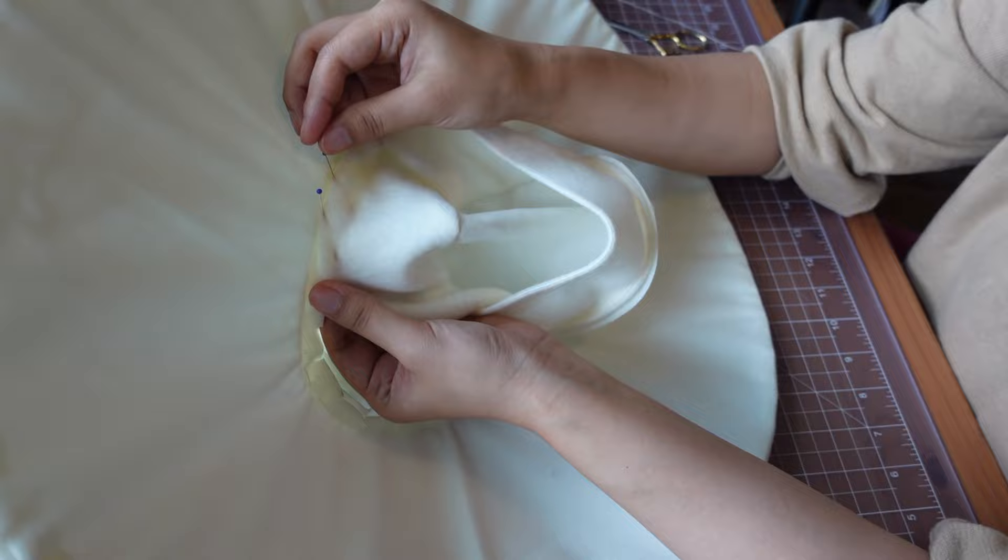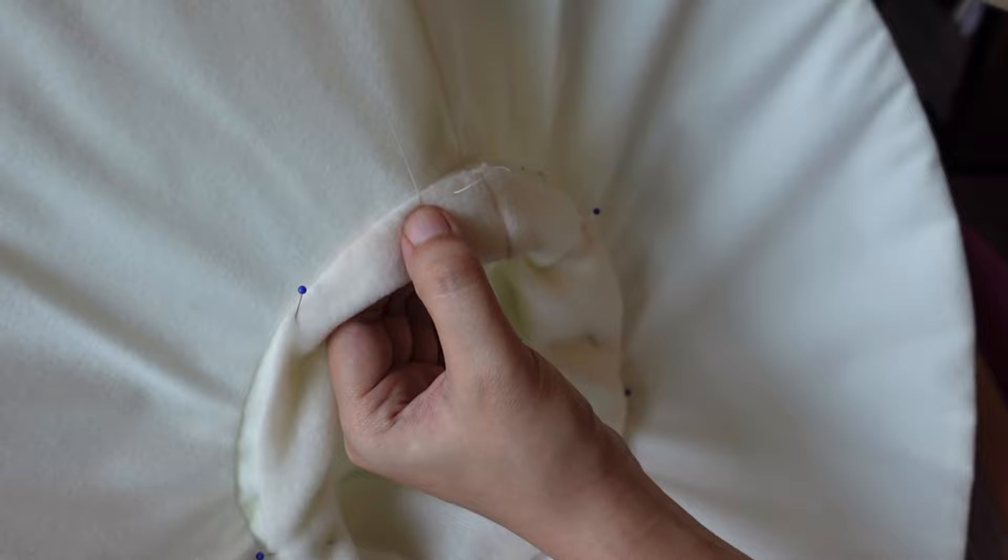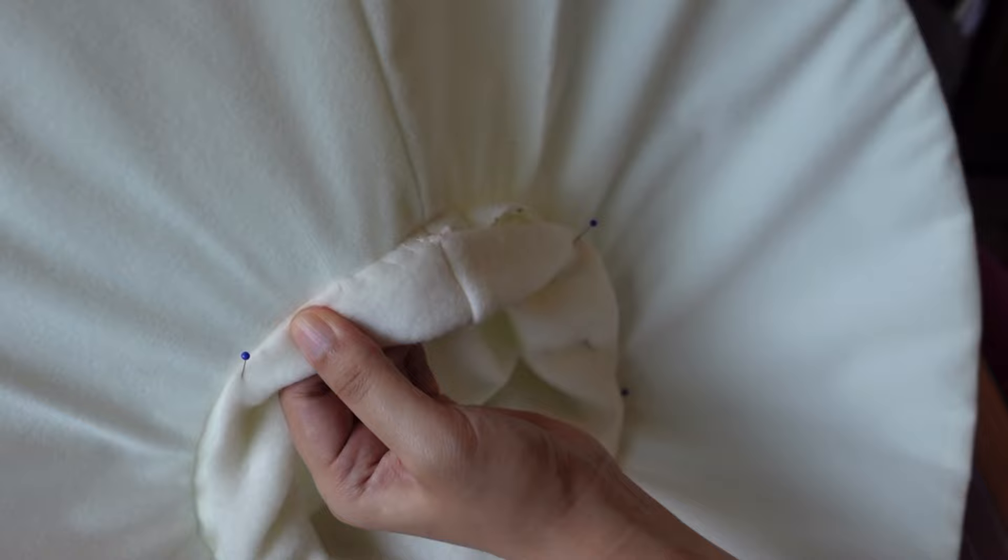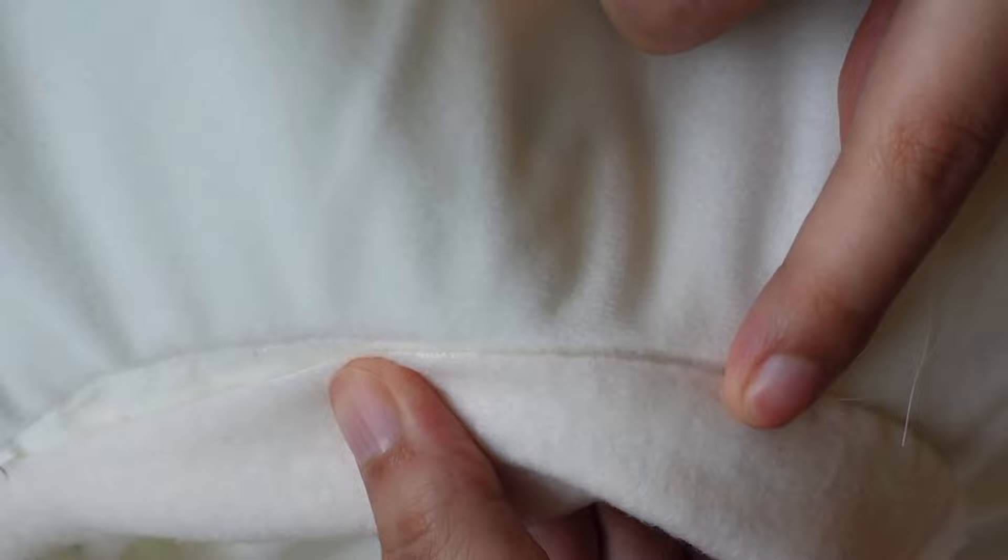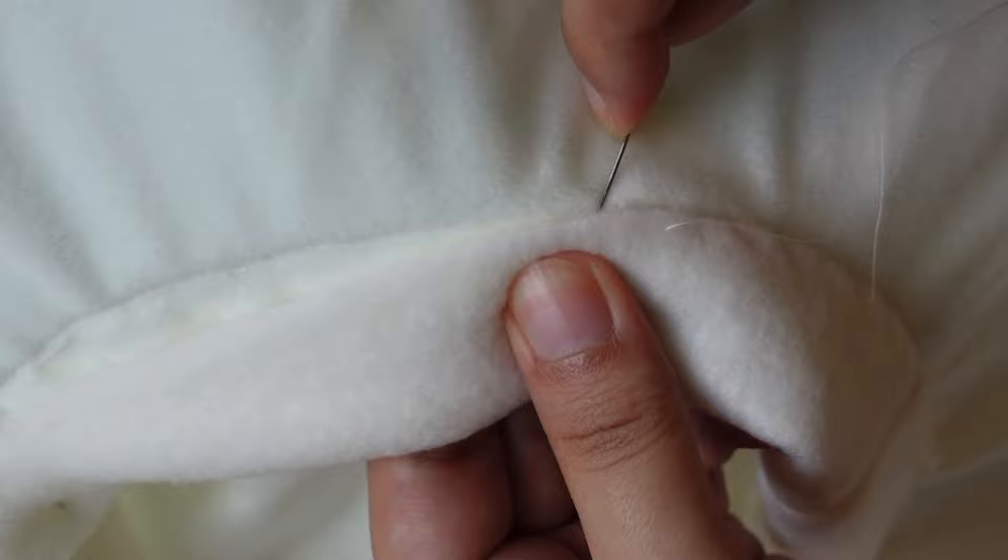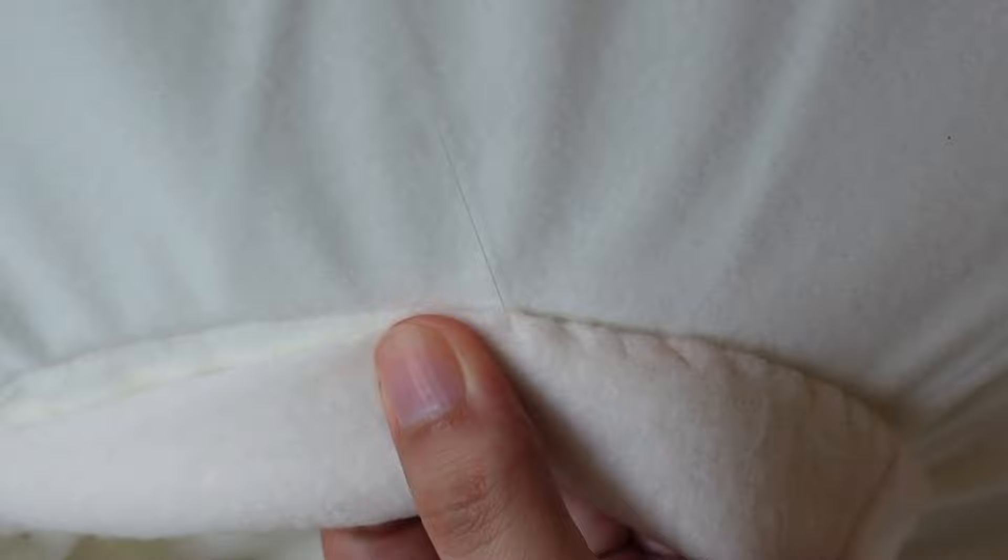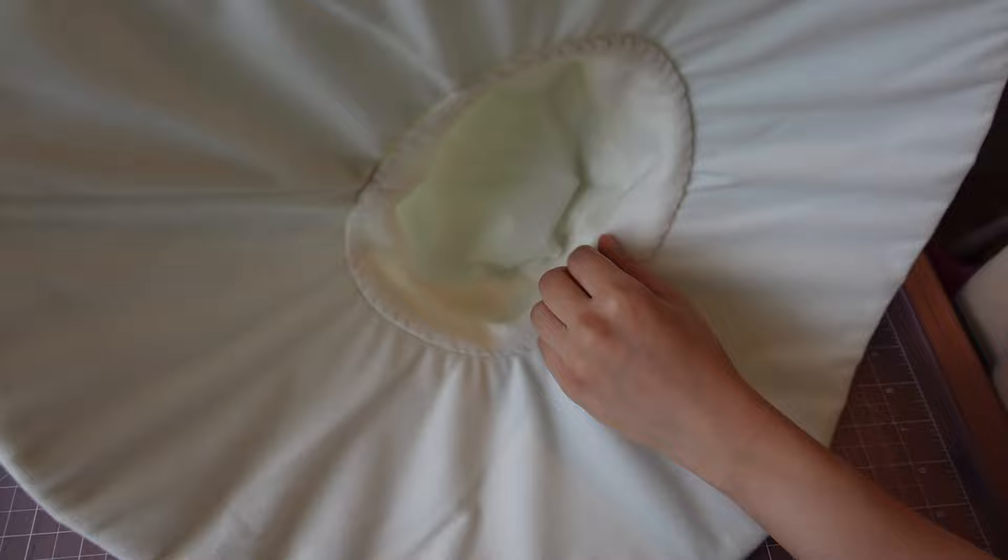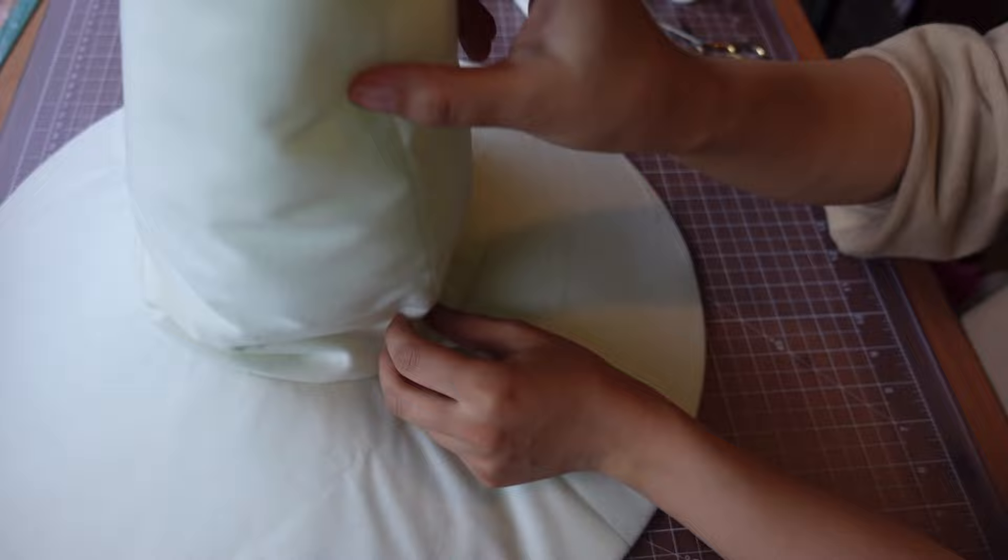I hand stitched the lining to the base of the hat. I didn't fold over the raw edge because I was using thick fleece fabric, but if you use thinner material, you could turn about half inch toward inside the hat to make a neat lining edge.